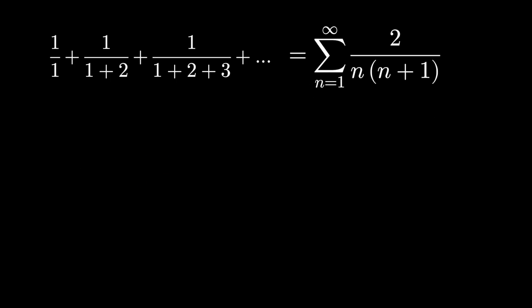What we can do is the partial fraction decomposition. Let's factor the two out from the numerator, and let's figure out how to break up the fraction 1 over n times n plus 1. This should break up into two fractions as A over n plus some B over n plus 1. There's many ways you can go about doing this.